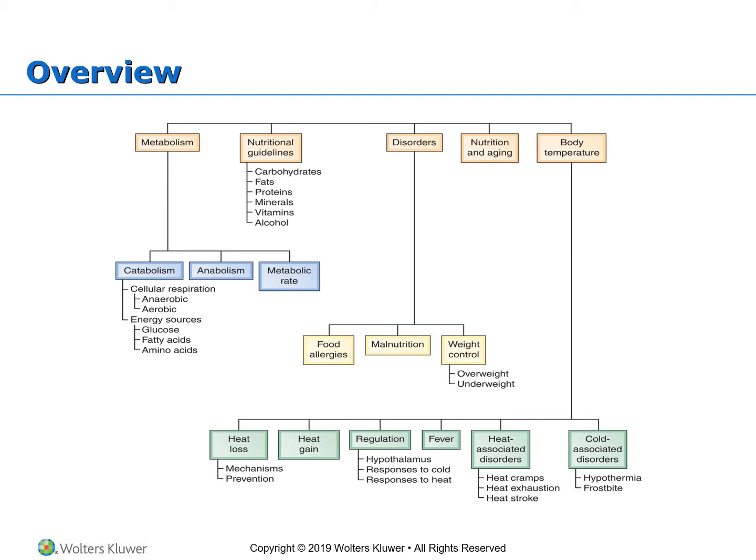This is an overview of our lecture for today. We'll start by describing the different types of metabolic activities — catabolism with all its components and anabolic processes — and we'll define and talk about the metabolic rate. We'll look into nutritional guidelines per type of nutrient, describe several metabolic disorders, look at nutrition for different age groups and aging, and examine body temperature in terms of heat loss, heat gain, regulation, fever mechanisms, heat-associated disorders, and cold-associated disorders.